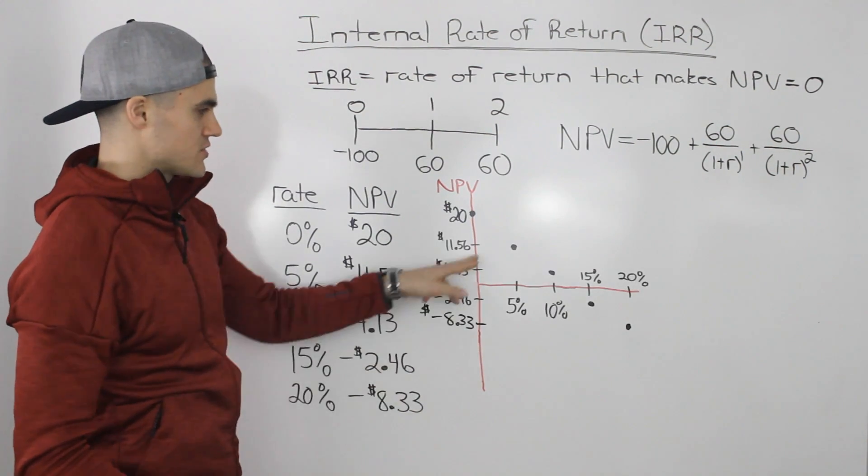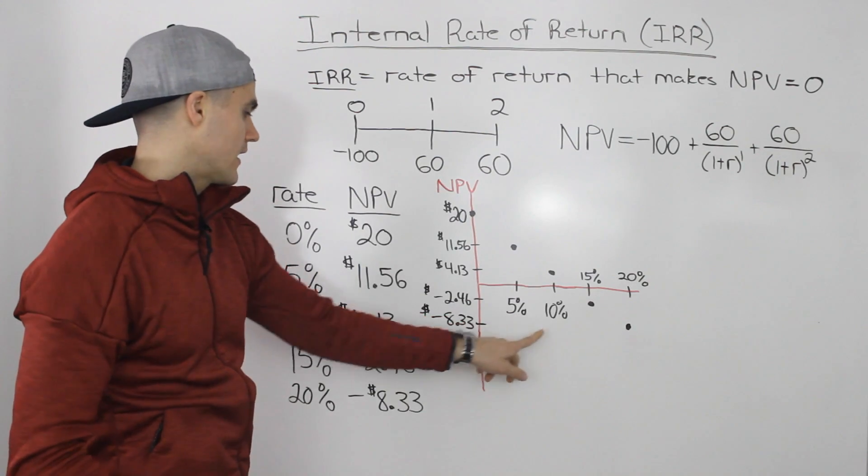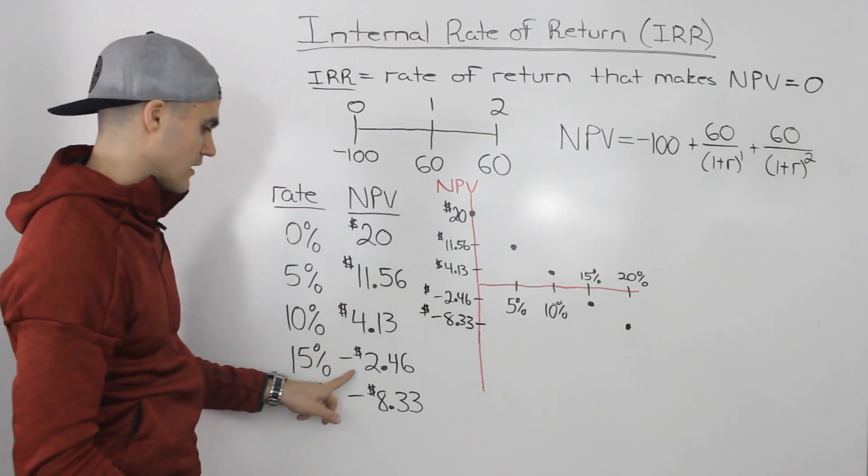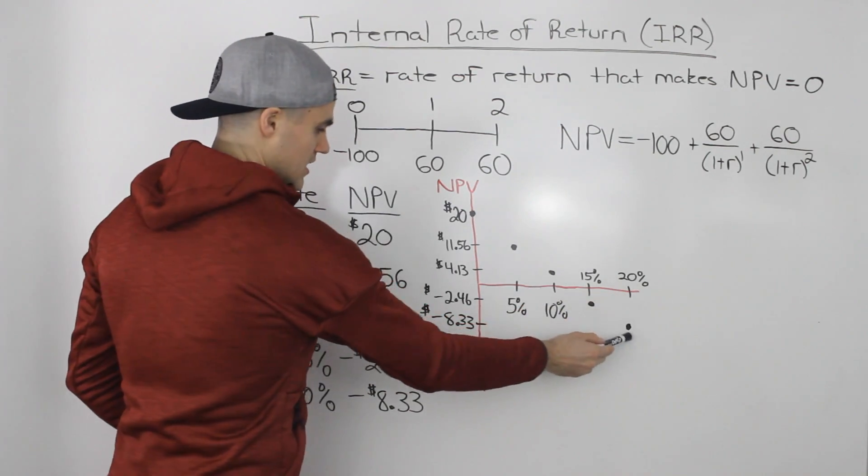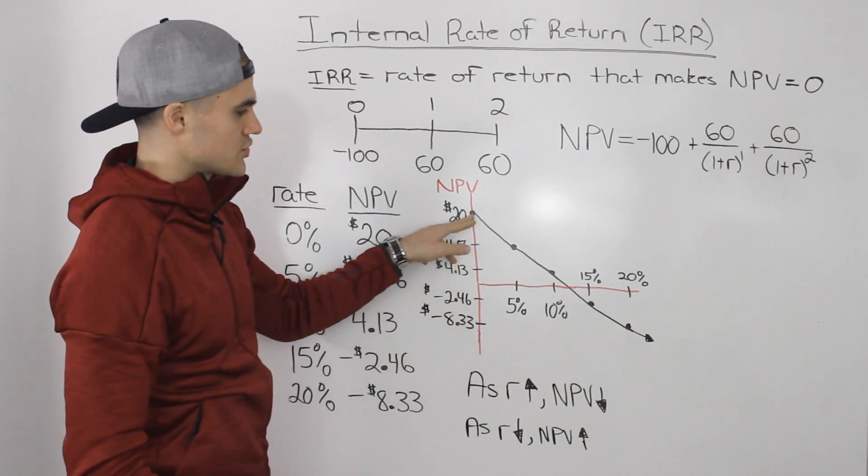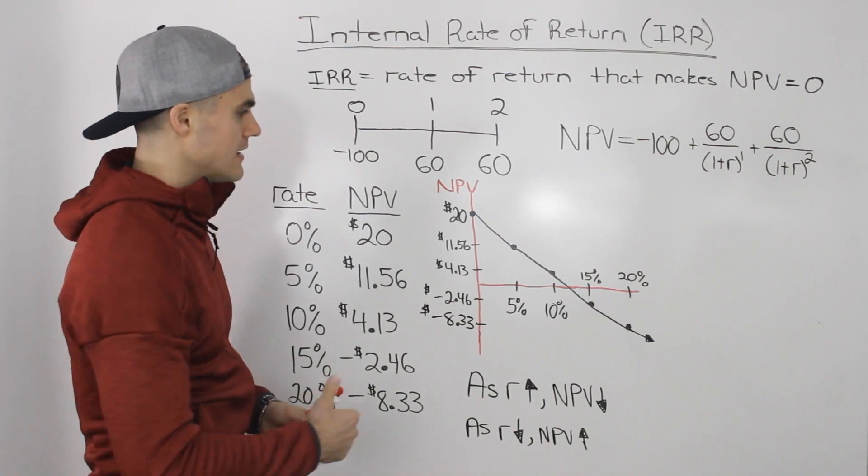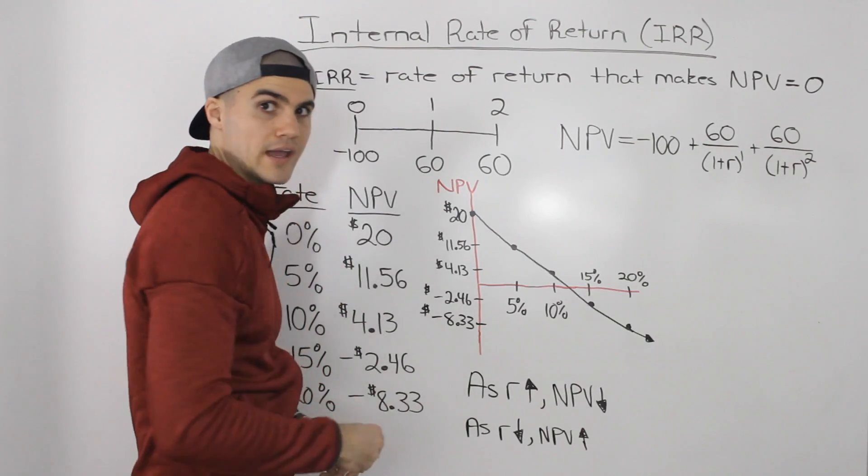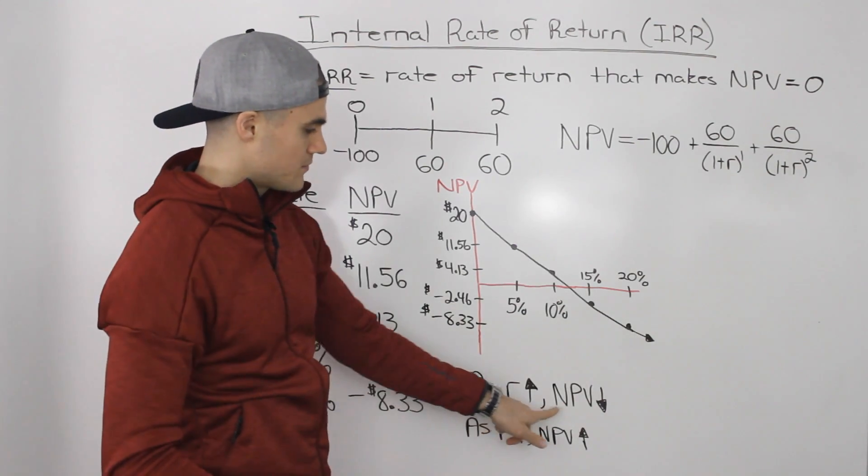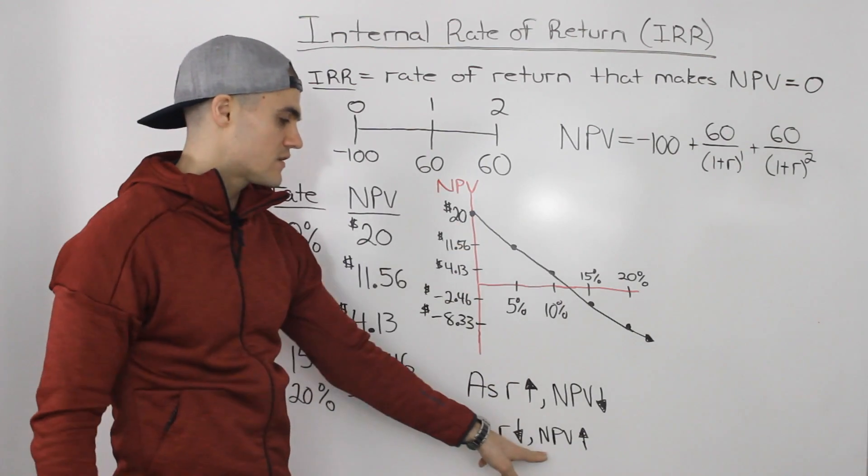And if we do that for the rest of the points we would get these coordinates here. So at a rate of five percent the NPV is $11.56. At a rate of 10 percent the NPV is $4.13. At a rate of 15 percent the NPV is negative at negative $2.46. And then at 20 percent negative $8.33. So if we connect everything and then draw a line. Now this looks like a line sort of but it should actually be a bit of a curve, so don't mind my drawing. But even from this we can tell that as the discount rate is going up, the NPV is going down. So the discount rate and the NPV have an inverse relationship. So as the discount rate goes up the NPV goes down, or vice versa, if the discount rate goes down, so we're going to the left, the NPV goes up.